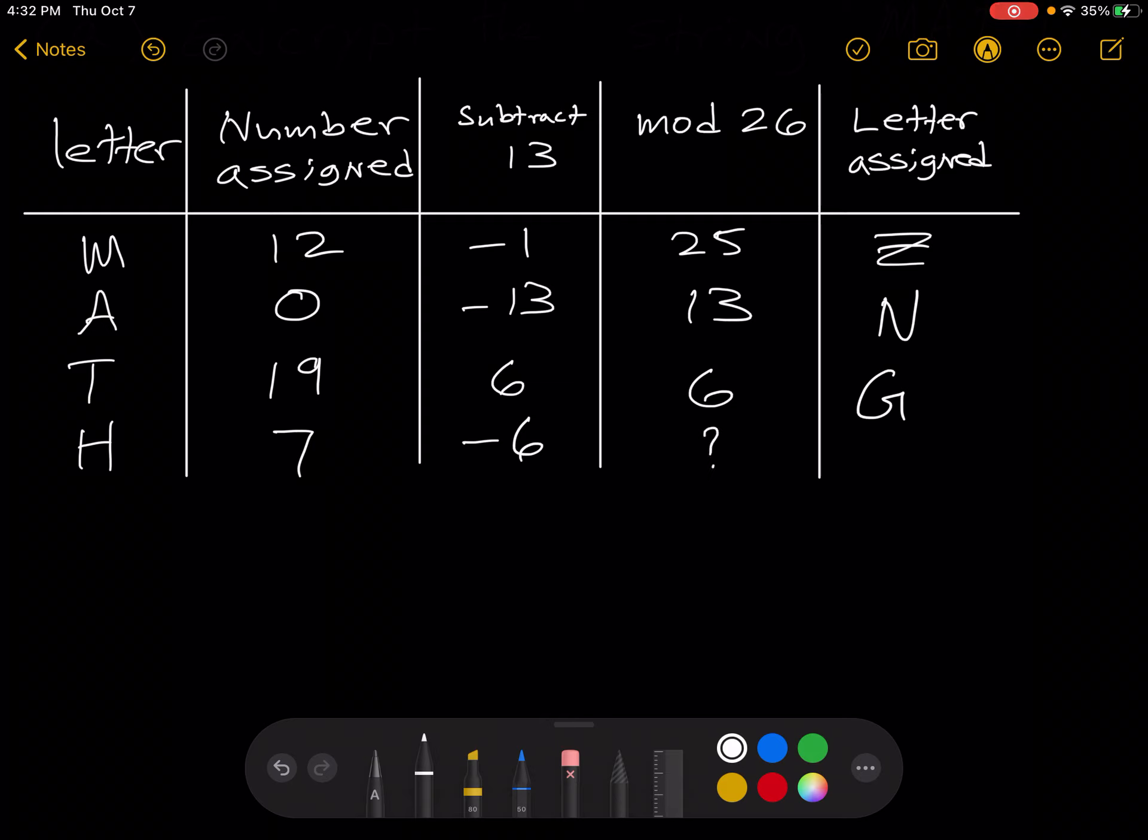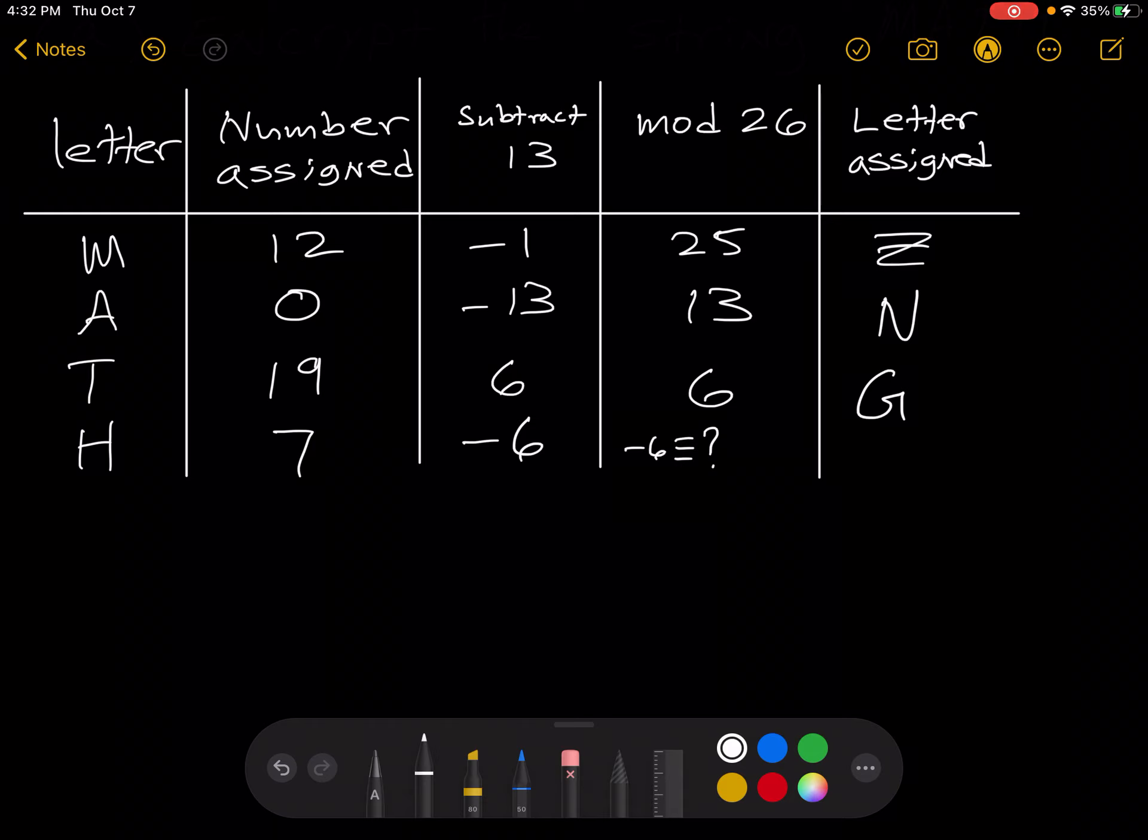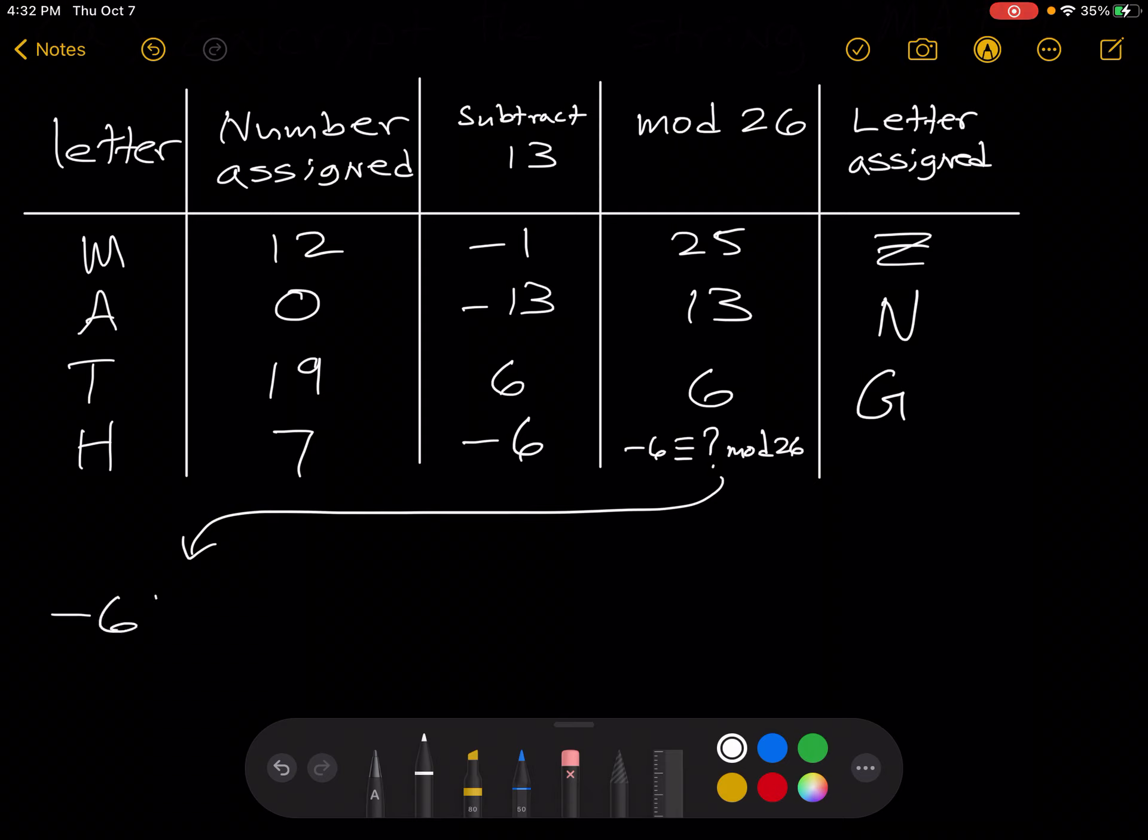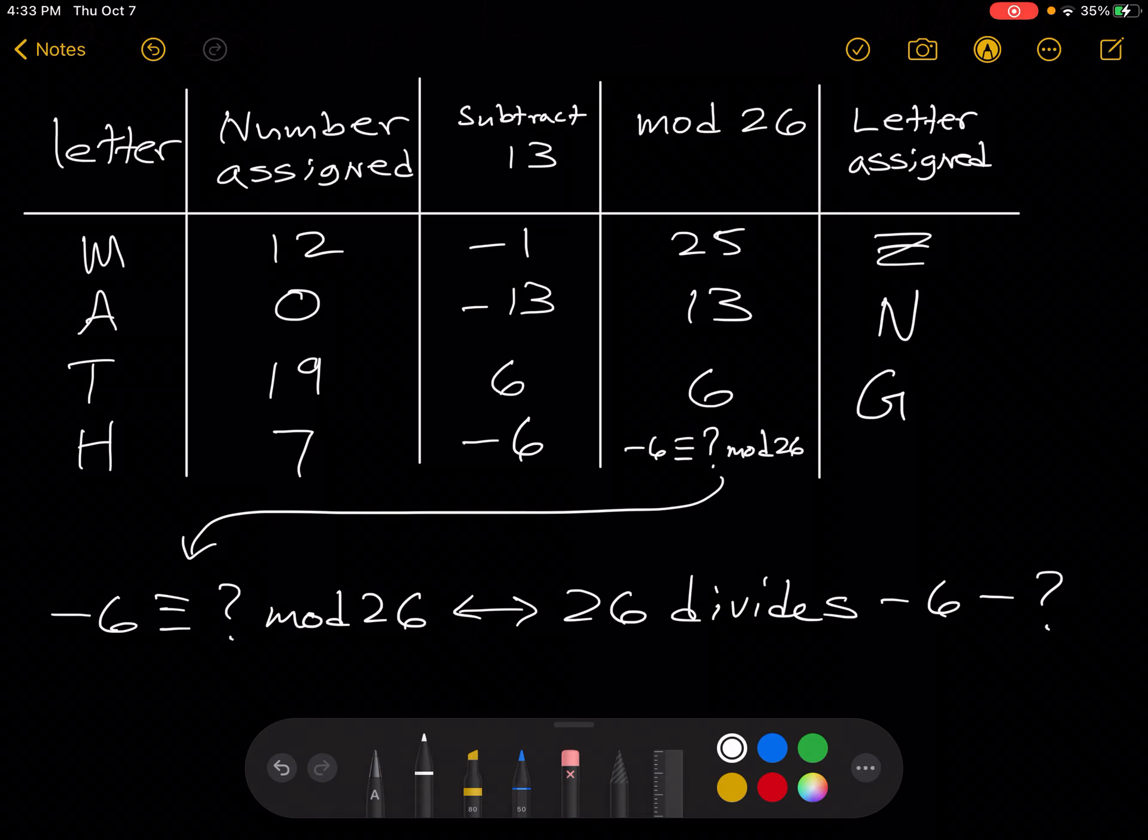And over here, we want a number between 0 and 25 inclusive, congruent to negative 6 mod 26. There we see that question mark is 20. This is because negative 6 minus 20 is negative 26, and 26 divides negative 26 evenly.